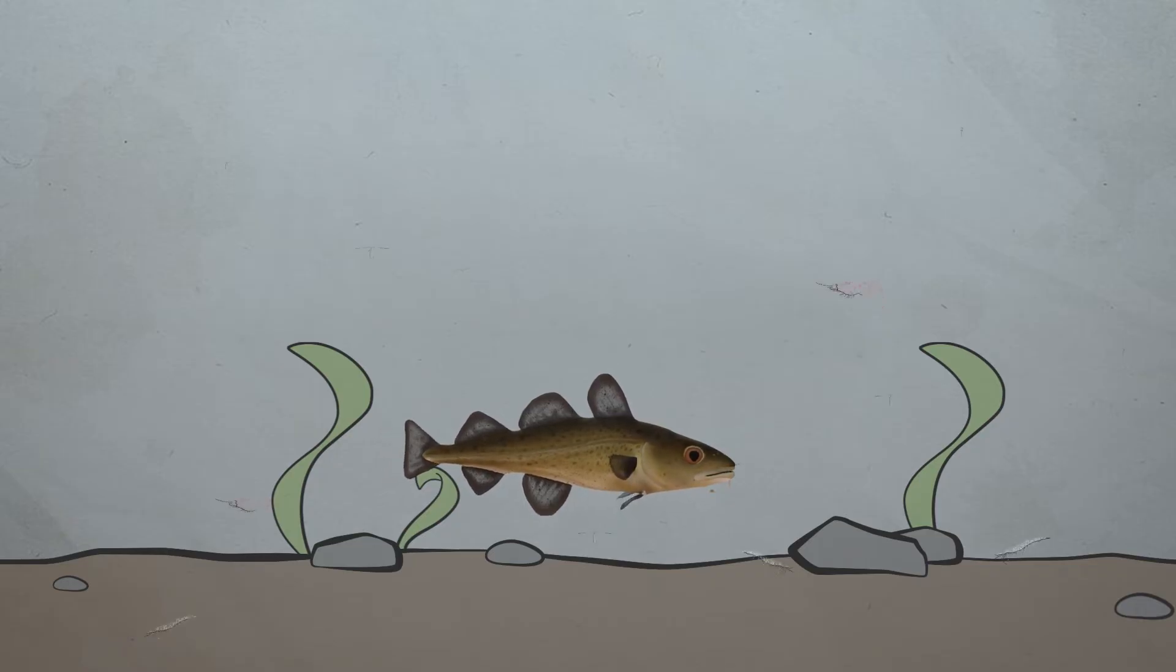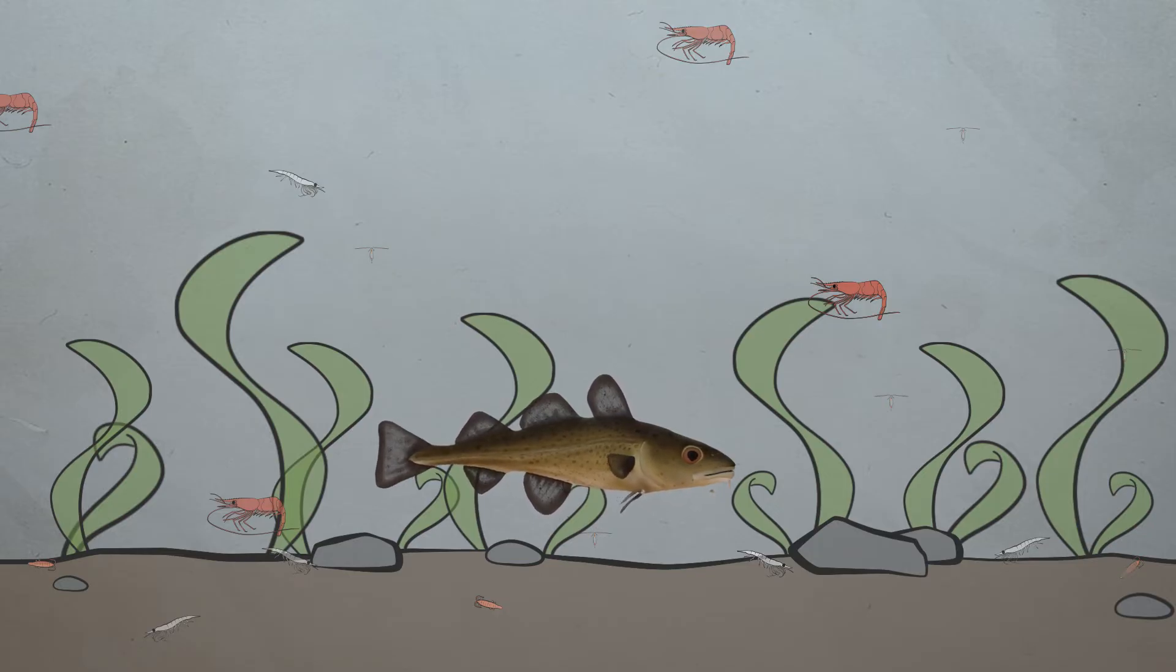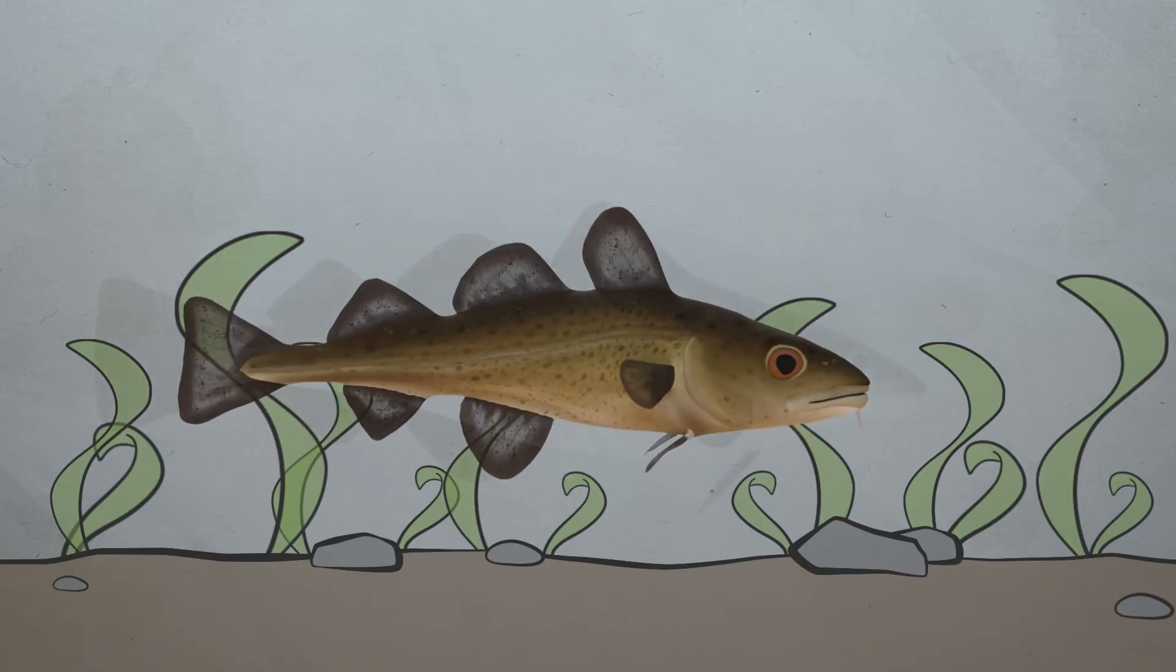During this period, cod are opportunistic and will eat what is available. In the early days, they most often live in the kelp belt and their diet is dominated by various benthic animals and crustaceans. As they grow, their diet changes to become more fish-based.